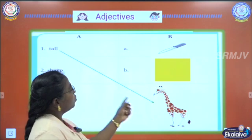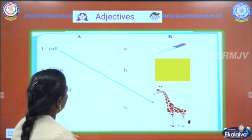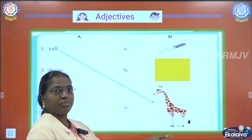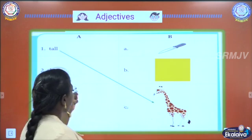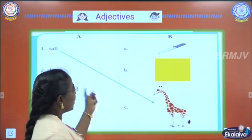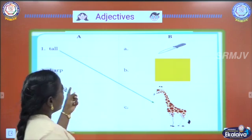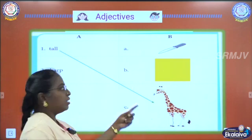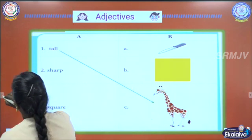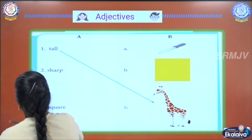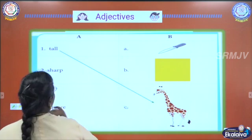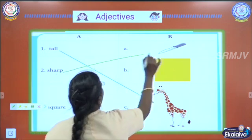And we can do this exercise. Tall — which is tall here? Giraffe. Giraffe is tall. So tall giraffe — tall is the adjective and giraffe is the noun. You match the picture. Sharp — which is sharp here? Knife. So sharp knife.